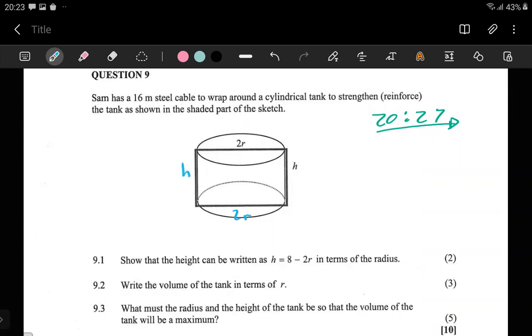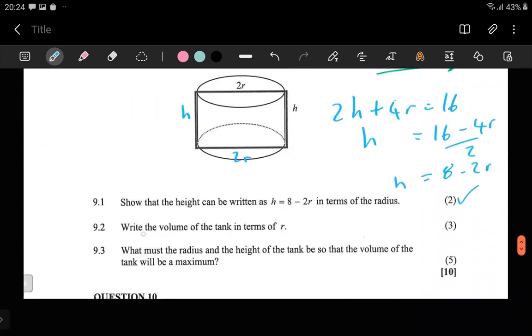If this is 2r, this is 2r, if this is h, this is h, so you will say 2h plus 2r plus 2r gives you 16. Then you solve for h. You divide by 2 which gives 8 minus 2r. That's for the first one.